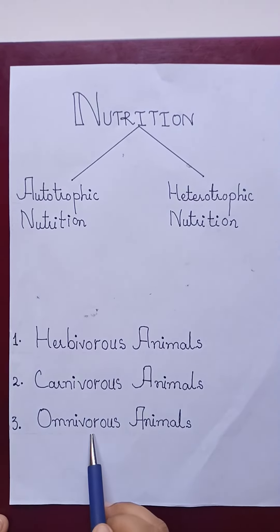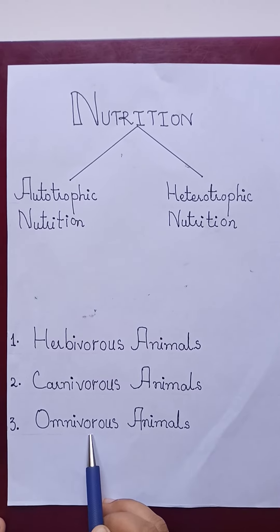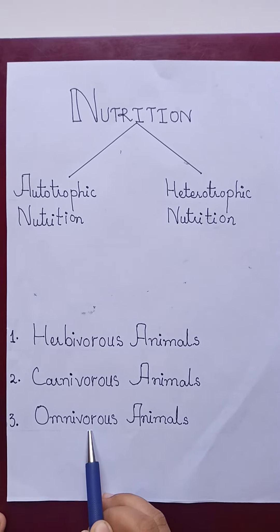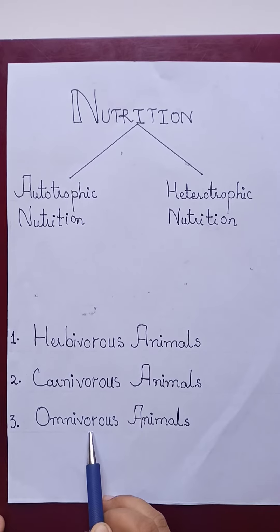Animals which eat both plants and flesh are called omnivorous animals. Examples are man, crow, and cockroaches.